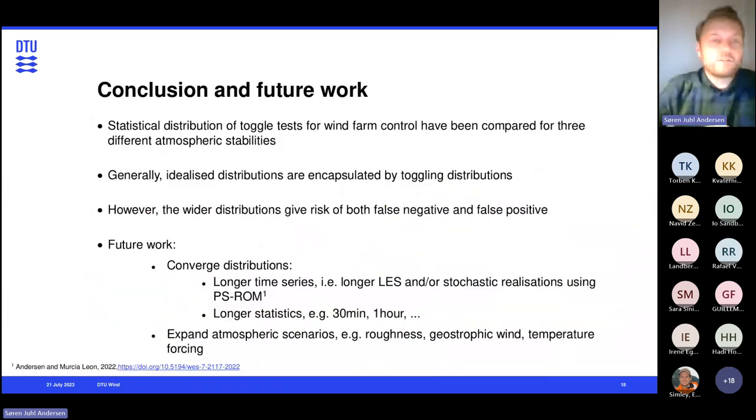So that concludes the talk. But basically, what we have tried to do is to compare the statistical distributions of toggle tests and wind farms for different atmospheric stabilities. We have compared these idealized distributions where we know everything, compared them to toggle distributions, and we see that the idealized are encapsulated by the toggle distributions, which are typically wider. And this widened distributions, that gives a risk of both false negative and false positive results.